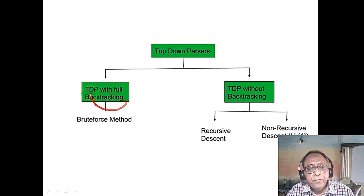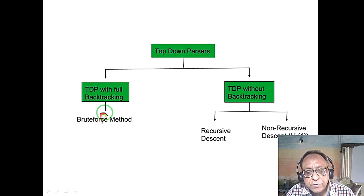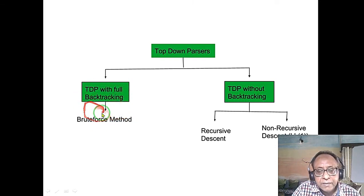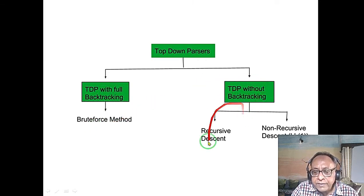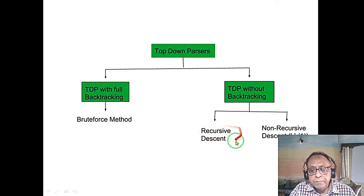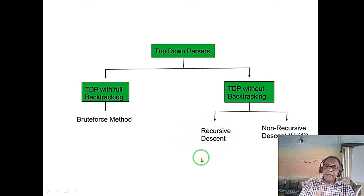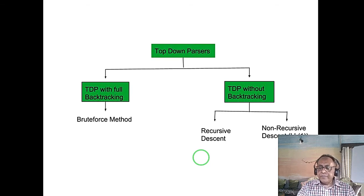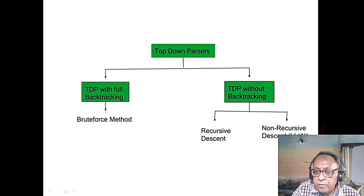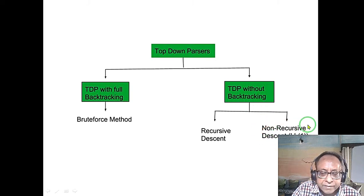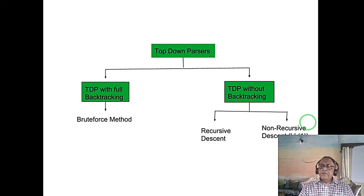Top-down parsing with backtracking is brute force and takes O(n³) time. Recursive descent parsing also uses recursion and requires a stack — this is risky due to potential stack overflow. We prefer a table-driven non-recursive descent approach, which is the best implementation of LL(1) and runs in O(n) time, though it has many restrictions and not all programming languages can be converted to LL(1) grammar.